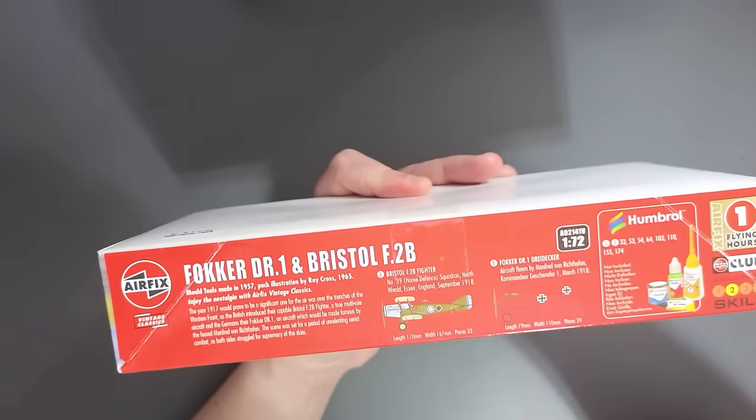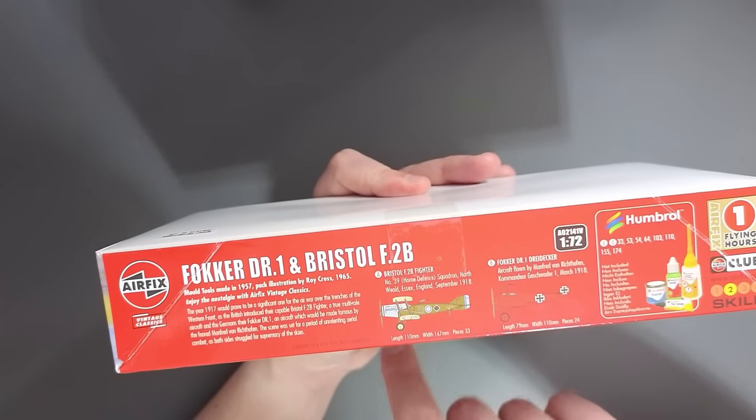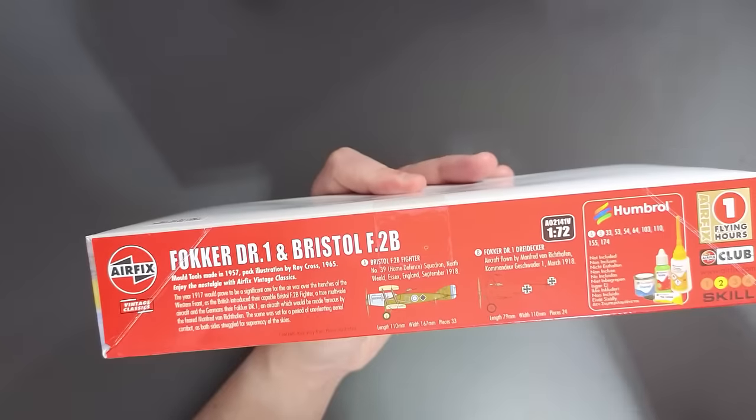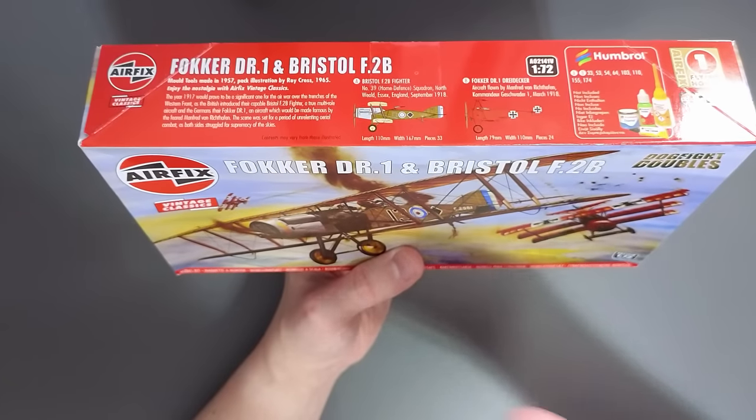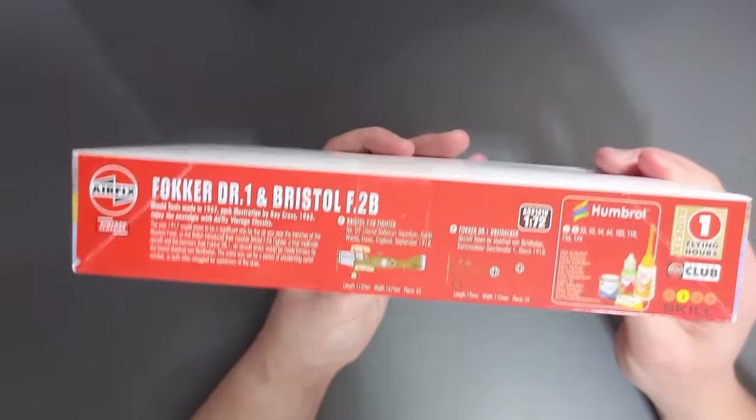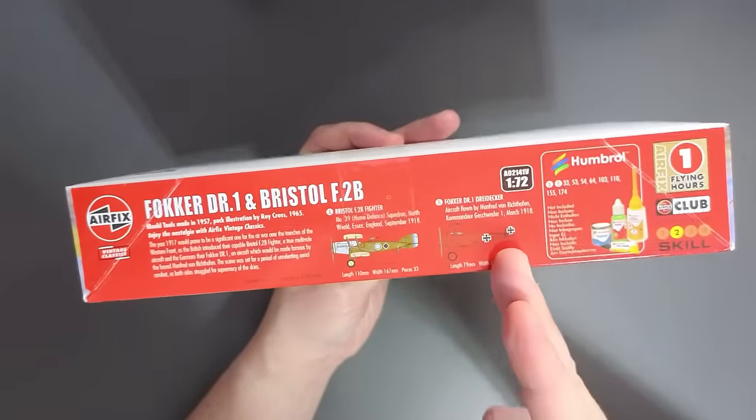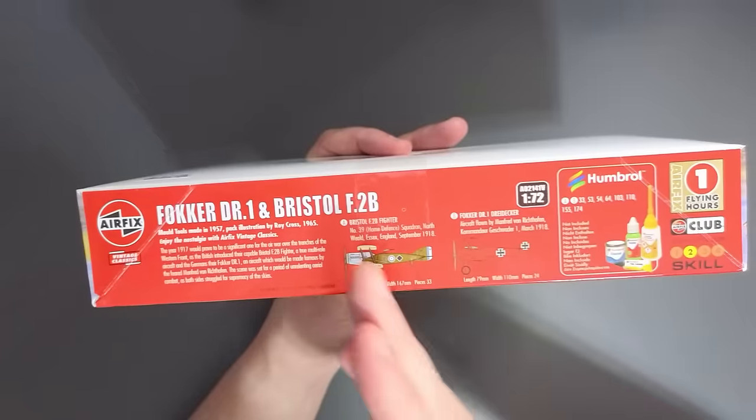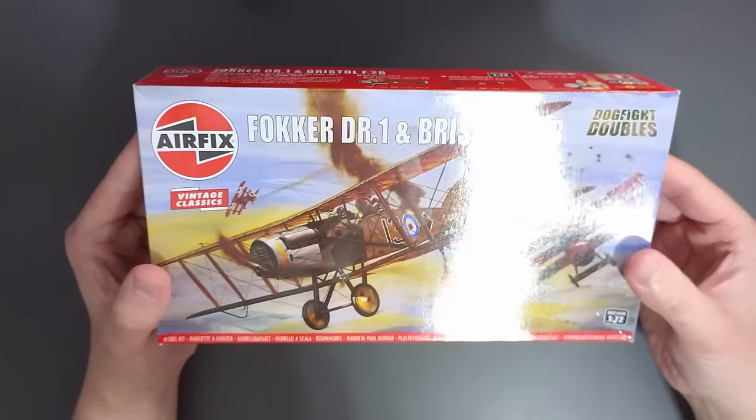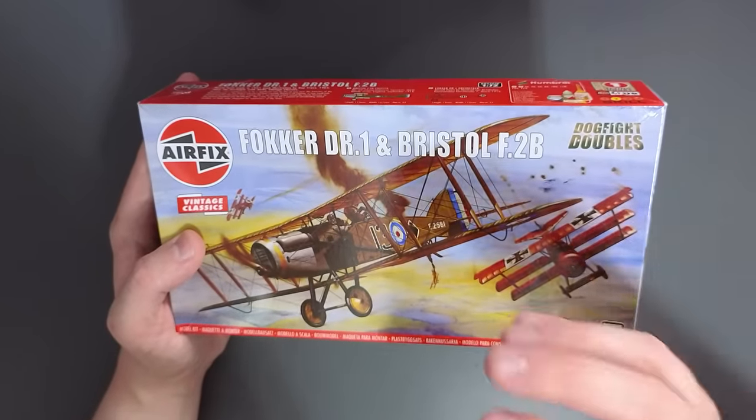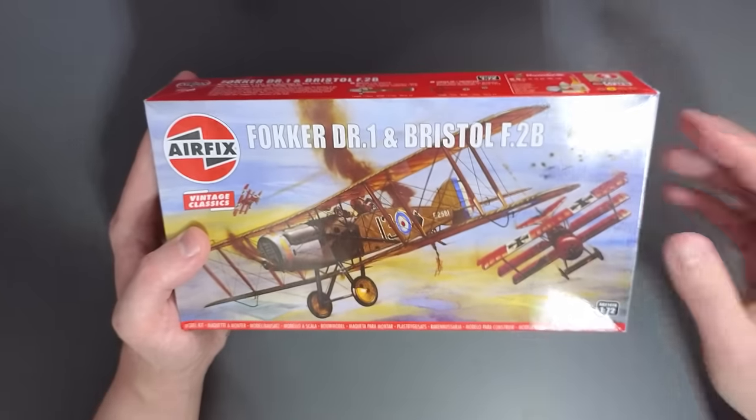The thing about this is that if you look on here, your Fokker DR1 was a frontline aircraft. It was flown famously by Manfred von Richthofen, and this was in March 1918. However, the Bristol F2B, featured in this set, is part of the Home Defence Squadron in Essex in September 1918. So by that logic, technically these two aircraft would never have physically fought against each other one-on-one during the First World War, because this aircraft was in the United Kingdom, and this aircraft was not, and they were at different time periods. One was in March, one was in September.